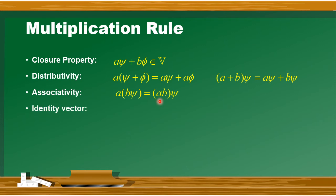And the next property of the multiplication rule is identity vector. Addition और multiplication के लिए identity different है, लेकिन common property यह होती है कि जब आप operation करते हैं तो आपको वापस उसी तरह का vector मिलना चाहिए. जैसे addition में psi में zero null vector add करते थे तो ultimately psi ही वापस मिलता था. Multiplication में कोई identity vector I है - उसको psi के साथ multiply करें तो result again psi ही मिलेगा, unaffected. इसको identity vector का नाम दिया जाएगा.